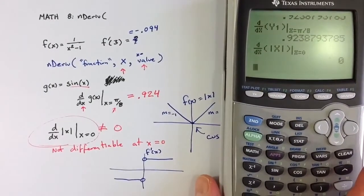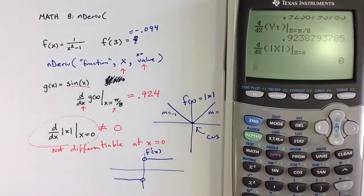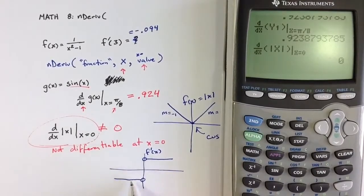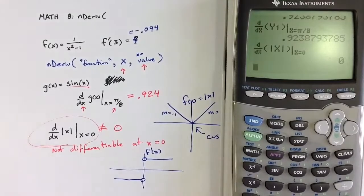With a graphing calculator, it's doing this numerical process that compares what's happening up here with what's happening down there, and it decides that between 1 and negative 1, the value for the derivative should be 0, but it's not.